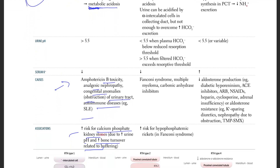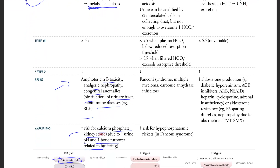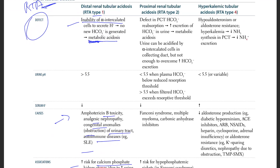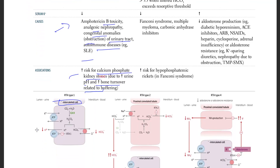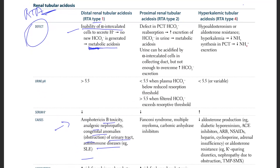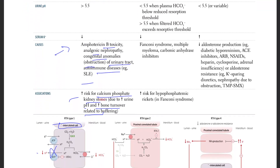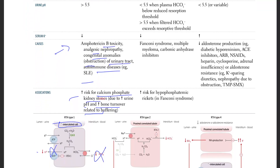The inability of alpha intercalated cells to secrete hydrogen means no new bicarb is generated in the blood, leading to metabolic acidosis.